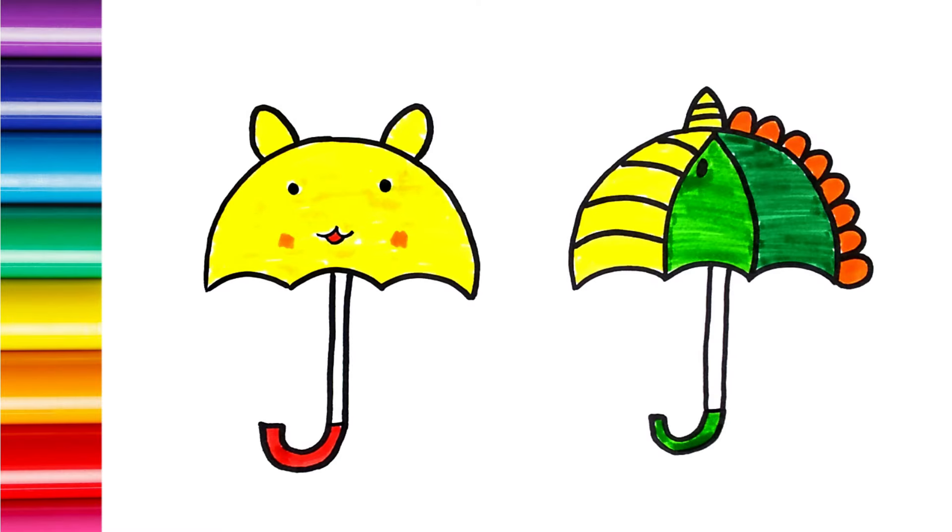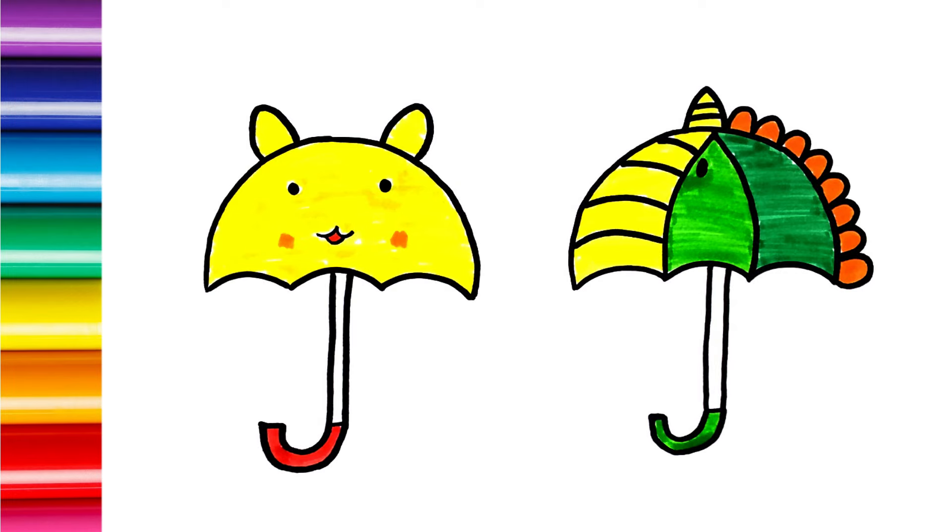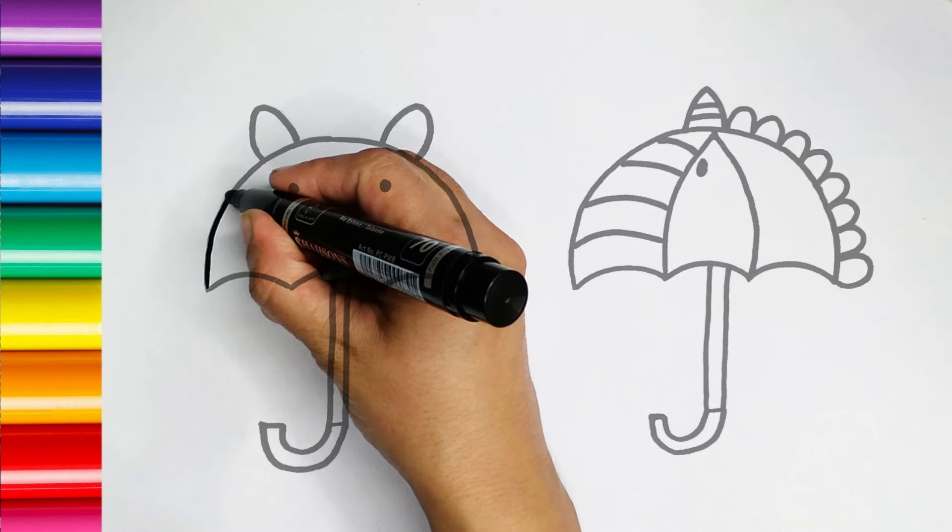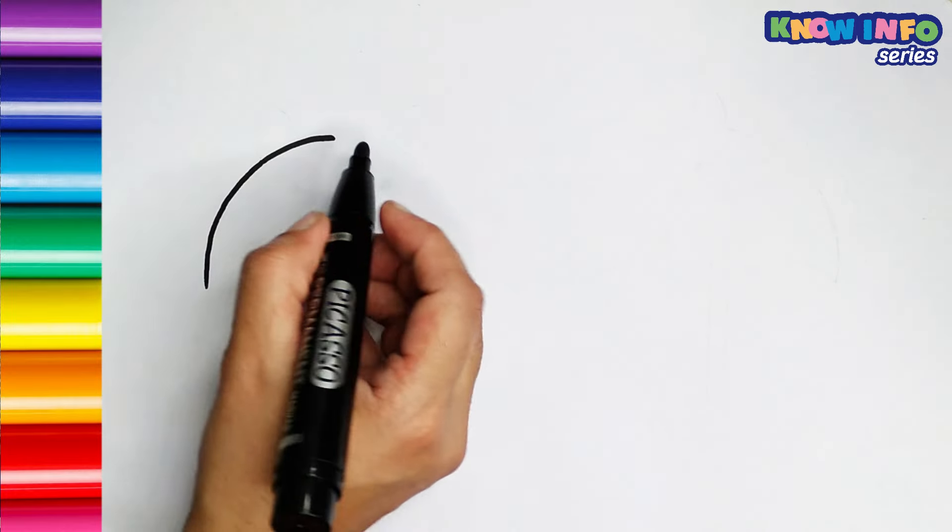Hello guys! Today we draw umbrellas step by step. Start by drawing a long curved line for the top of the umbrella. This will be the canopy.